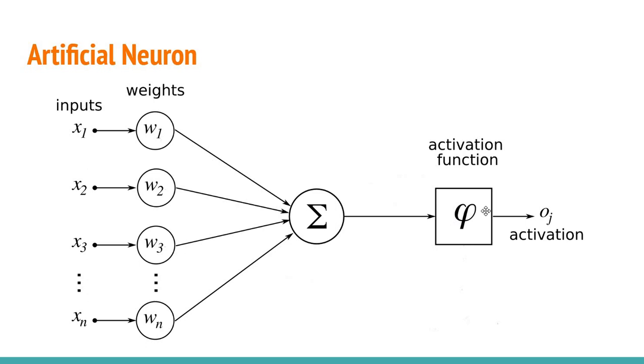And then it uses an activation function. And this would be the output of the neuron, which can be the output of the network if this is a neuron in the output layer.